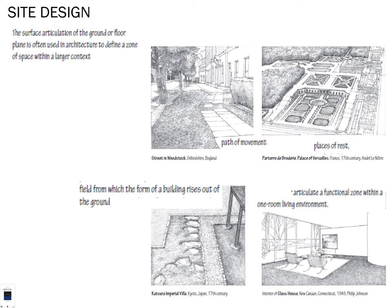You see the paths of movement and the places of rest. In urban design we learn about paths, nodes, edges, landmarks, and districts. The field from which the form of a building rises relates to your topography and site. On the interior, you can articulate functional zones — even with the way a carpet is situated within a one-room living room.